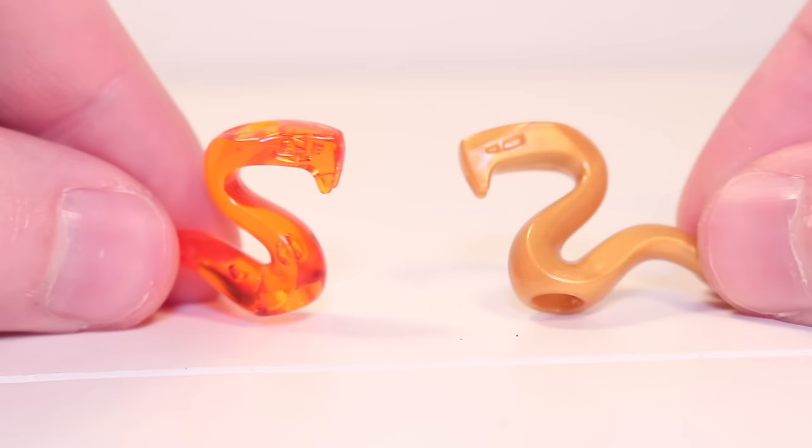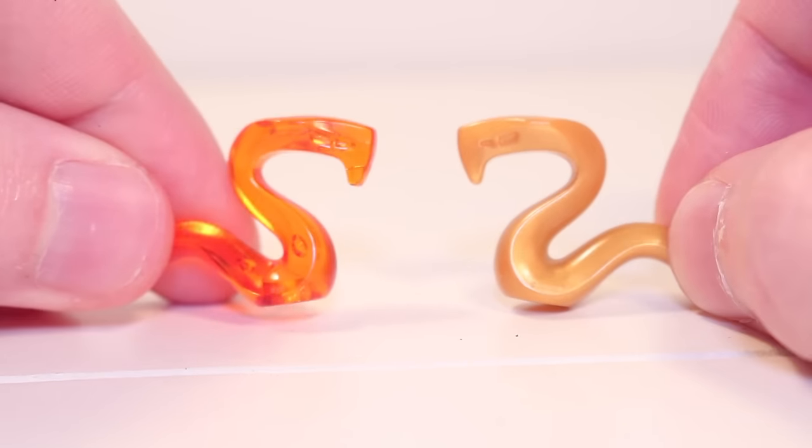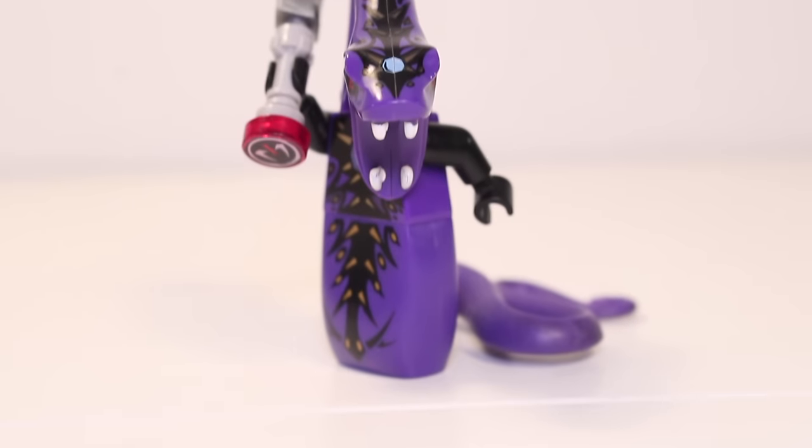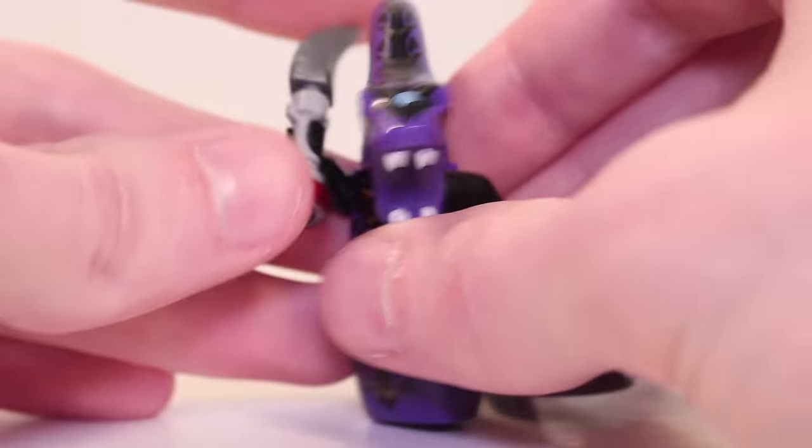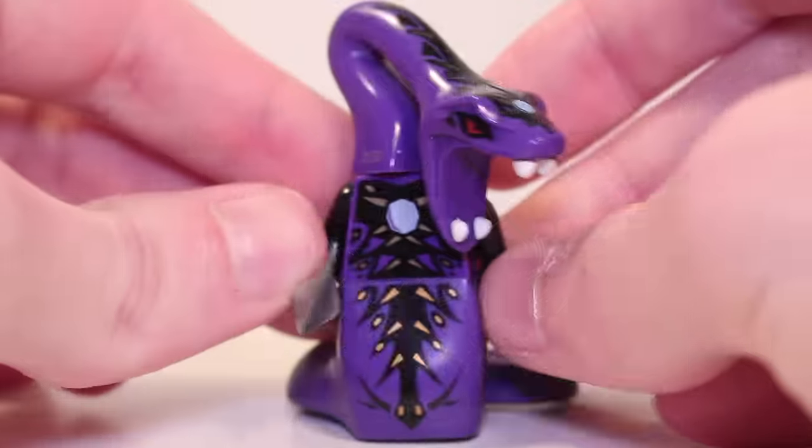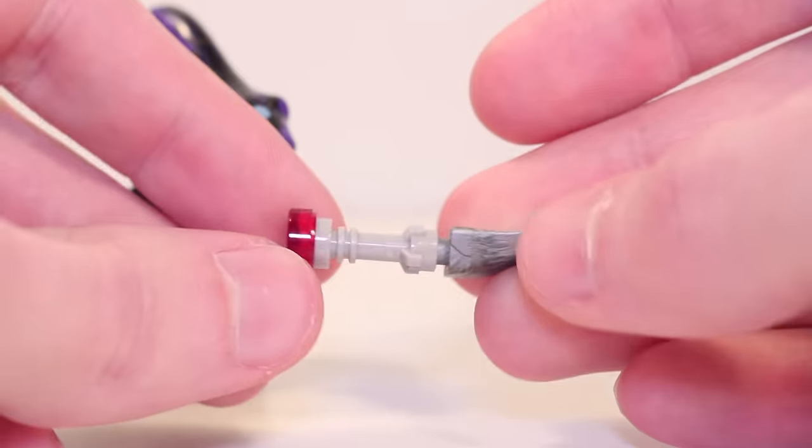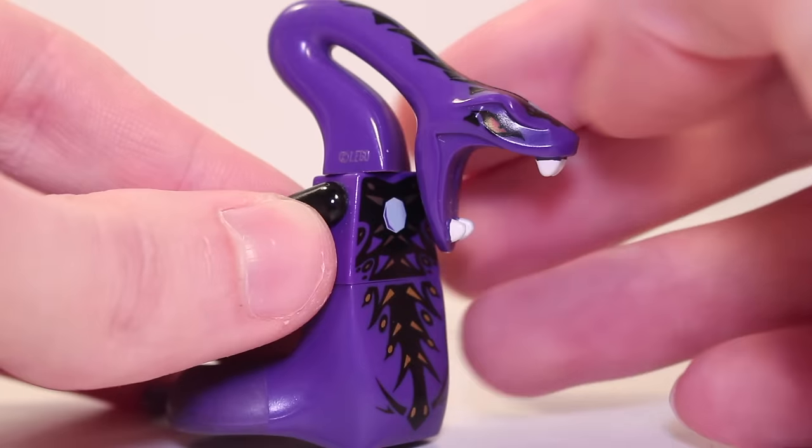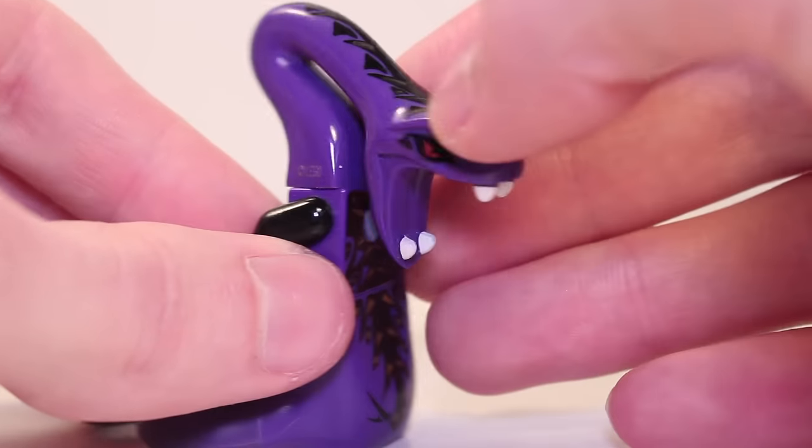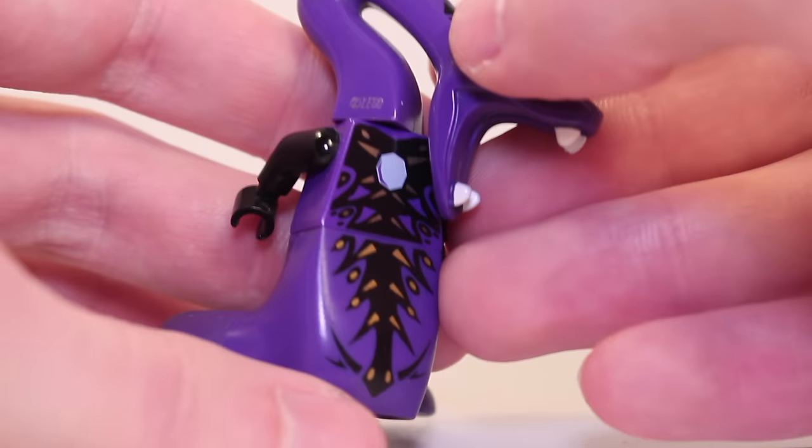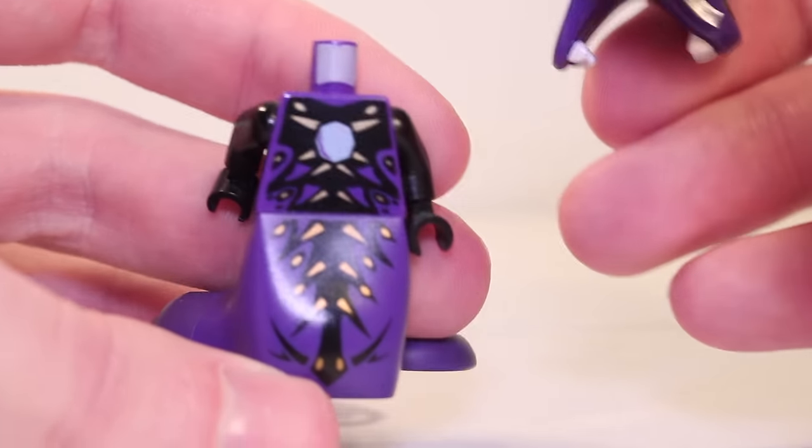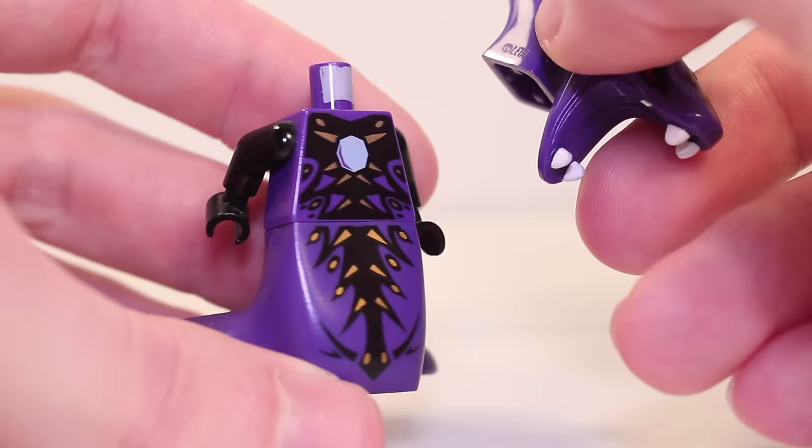The final 2012 Serpentine minifigure is Pythor, the last remaining member of the Anacondrai. Exclusive to the ultrasonic raider, he's got a giant head with his mouth wide open. And he wields the final Fangblade, this time it's the Fangpire's. His head can turn, unlike every other general, and the purple tail looks absolutely fantastic. The head covers some of his torso print which features black and gold detailing surrounding a diamond in the center.